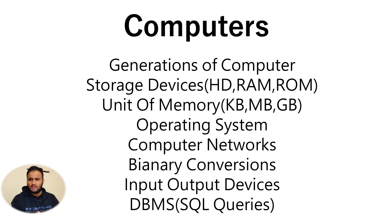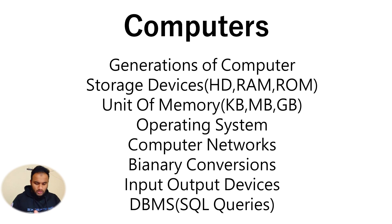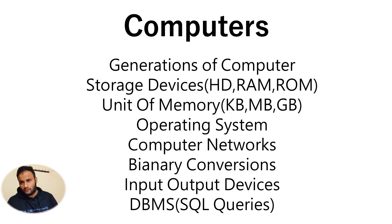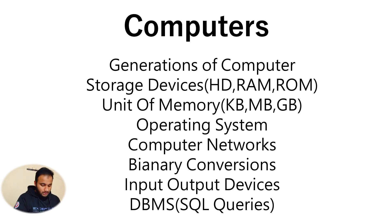Analyze the previous year question papers — take the computer section, understand what topics are being asked, note them down, search on Google, and also prepare related topics. For example, if they ask binary to octal conversion, cover all binary conversions including binary to decimal, and addition and multiplication of binary and octal numbers. If they ask a TCP/IP model question, also cover OSI model, HTTP, and IP addresses.